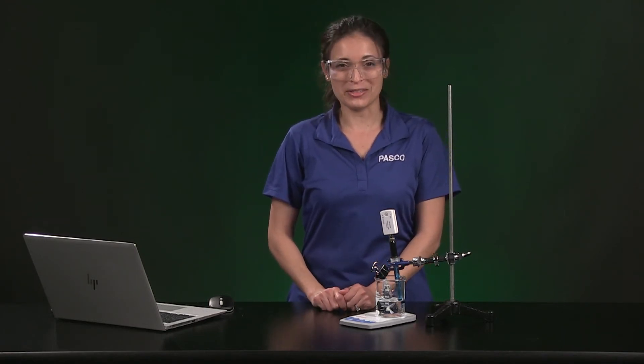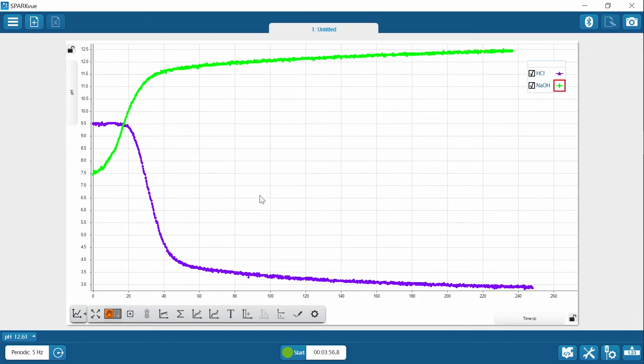In Table 2, you will need to record initial and final pH values for each run. Use the coordinate tool in Spark View to help you get these values from the data. These are XY coordinates, so the first value is time and the second value is pH. I can click and drag the gray box to move it to initial and final data points on each run.